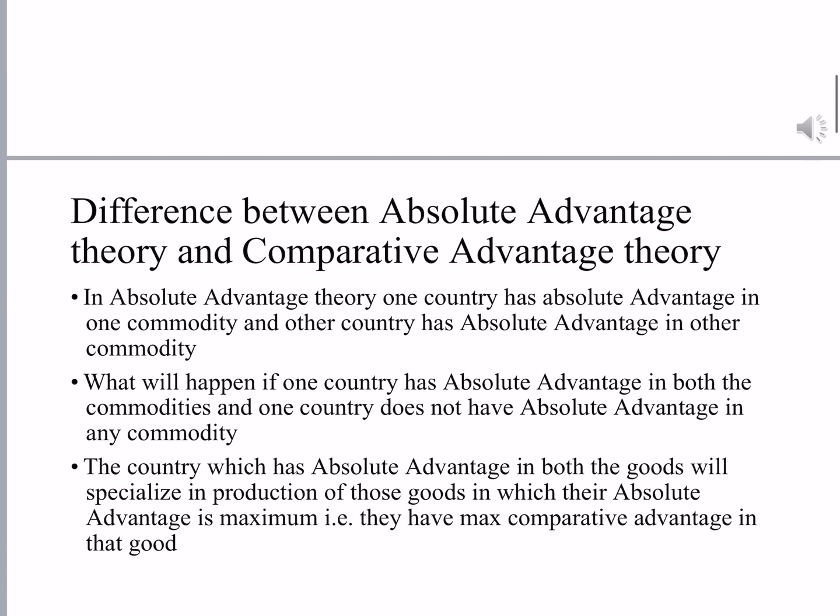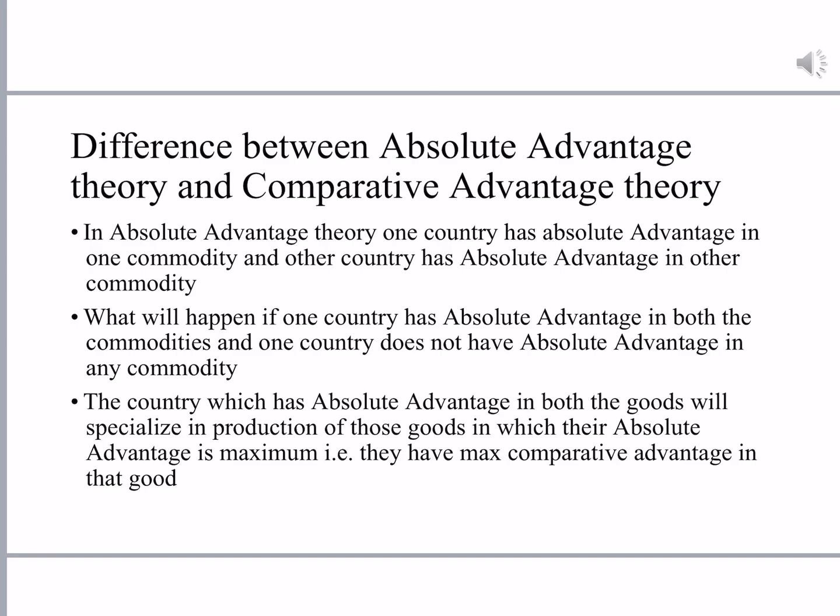In the theory of absolute advantage, Adam Smith said that one country has absolute advantage in the production of one commodity and the other country has absolute advantage in the production of another commodity, and both countries can trade and benefit. But what will happen if one country has absolute advantage in both commodities and the other country has absolute disadvantage in both commodities?